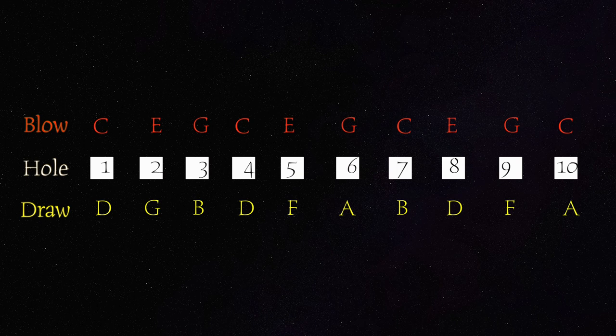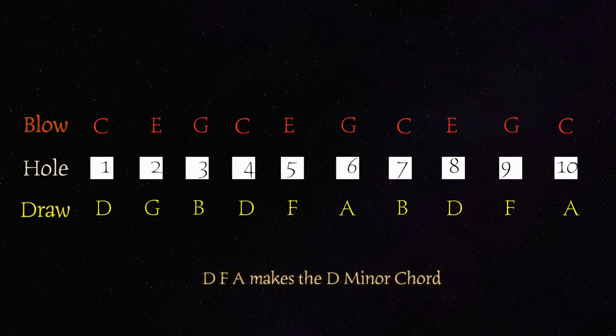Before we move on, I'd like you to notice that we have additional chords. In the 4, 5, and 6 draw, we have a D minor chord. The D, F, A creates a D minor chord.